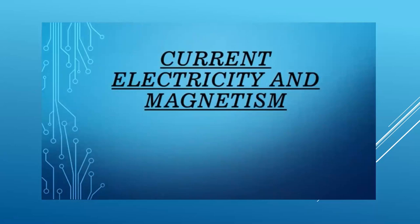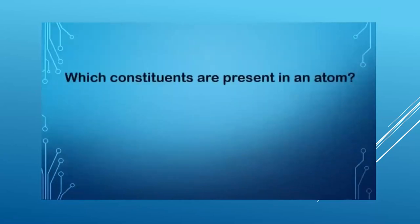Now, which constituents are present in the current electricity and magnetism chapter, chapter number four, part one? Before we begin the lesson, let's have a quick revision. Which constituents are present in an atom? Think, students.